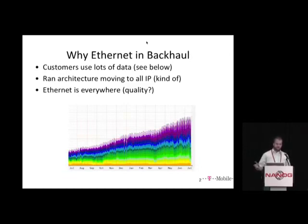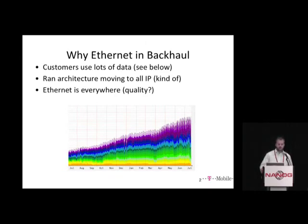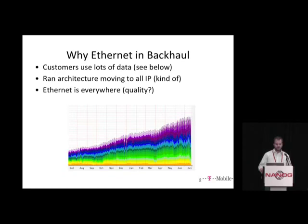Why Ethernet in the backhaul? The number one reason: customers use lots of data, and that just doesn't scale on TDM. Ethernet is a commodity — very inexpensive. We're able to see a lot of feature functionality move directly into the RAN architecture instead of trying to emulate it on top. It comes down essentially to cost and network growth. Ethernet is everywhere, though if you shop for services in rural parts of the United States, the quality and underlying technologies can be quite interesting.